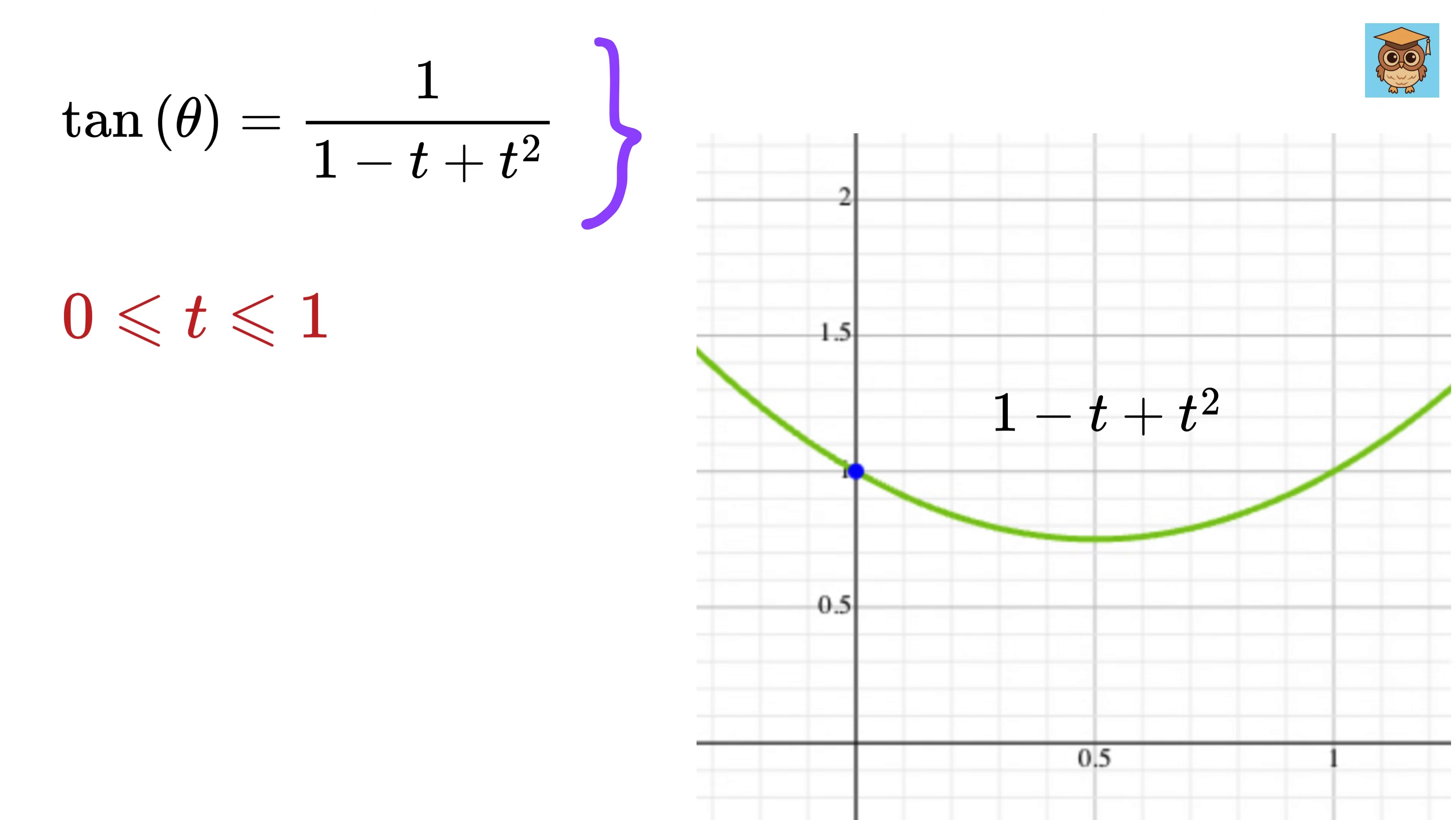If you look at the graph of the function 1 minus t plus t squared, it looks like this parabola. We can clearly see that from 0 to 1, this function is maximum at t equals 0 or t equals 1, where the value of this function is 1, and it has a minimum somewhere here.